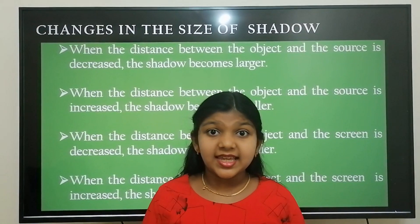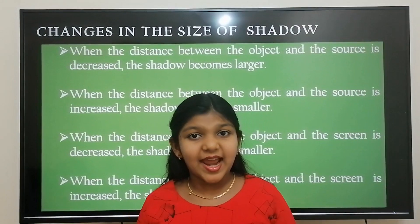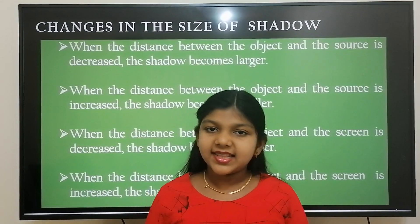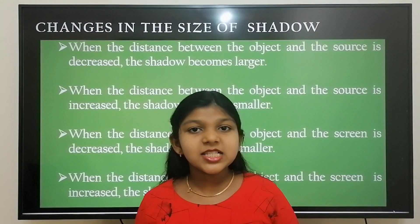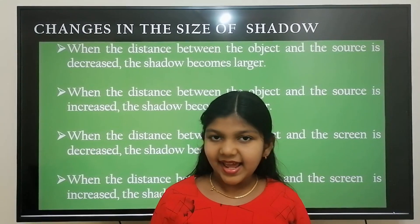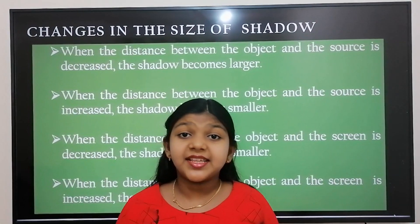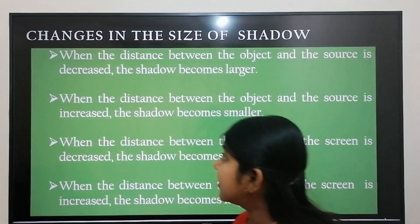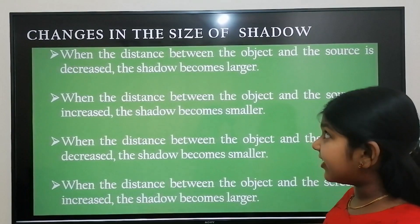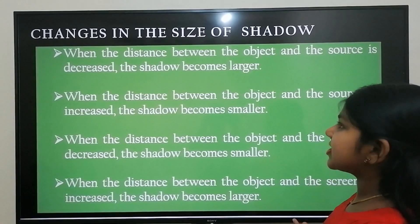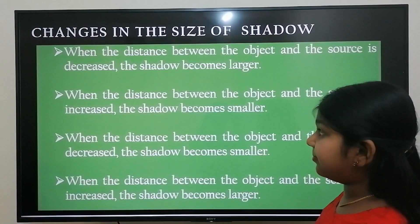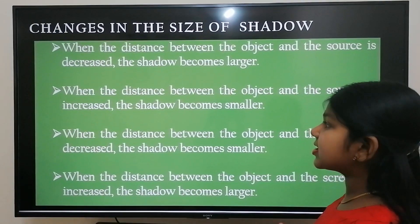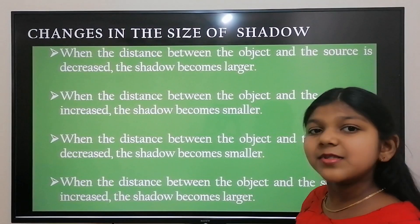Now we are going to see the changes in the size of shadow when we vary the distance between the source, object, and the screen. Let's discuss four cases. Case 1: when the distance between the object and the source is decreased, the shadow becomes larger. Case 2: when the distance between the object and the source is increased, the shadow becomes smaller.